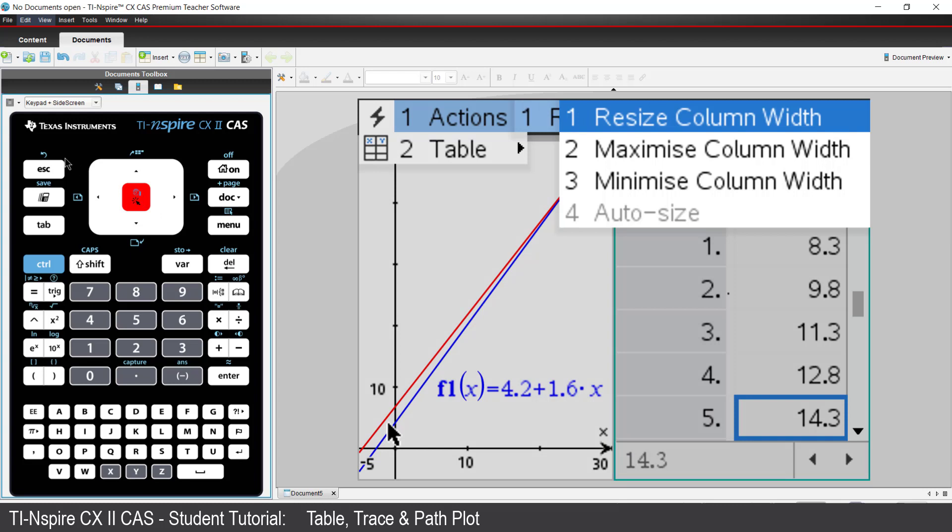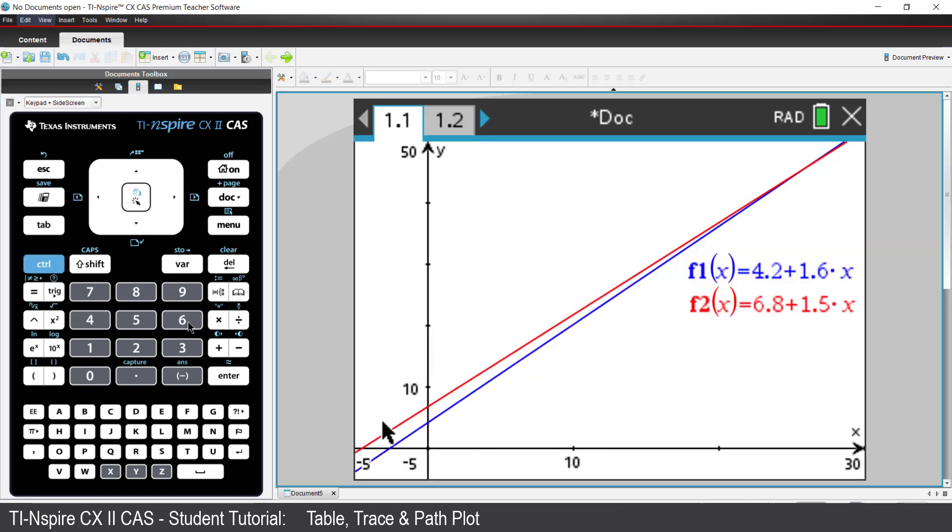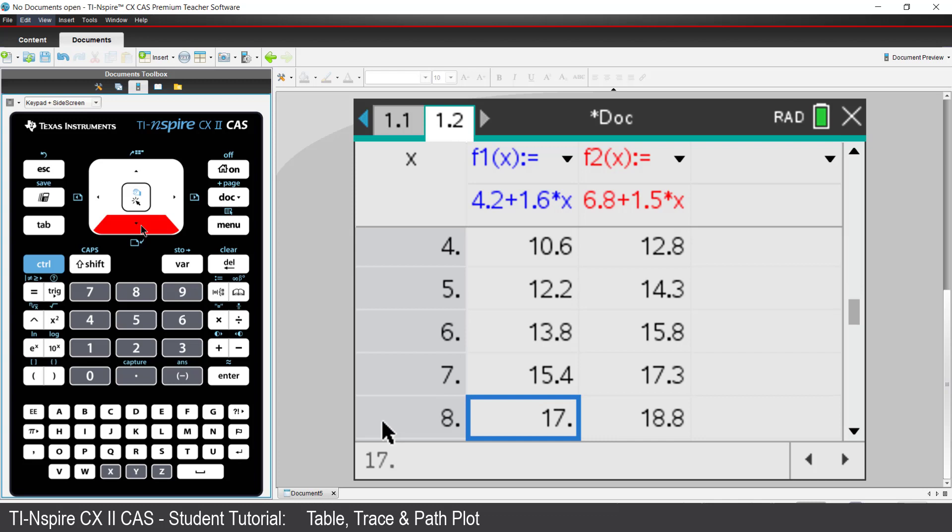Or, put the table on a separate page by pressing CTRL followed by 6 to ungroup the graph and table. Navigate to the next page. Now we can see both sets of prices side by side. To turn the table off, press CTRL followed by T.